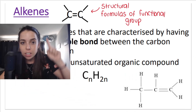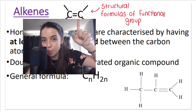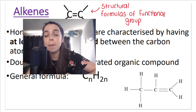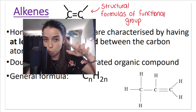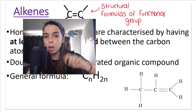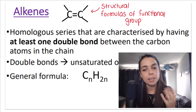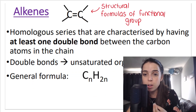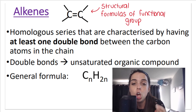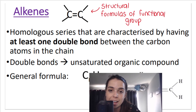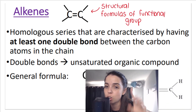When you think alkenes, think double bond. Remember: alkanes have a single bond; alkynes, with a Y, have a triple bond; alkenes have a double bond. Because they contain double bonds or multiple bonds between the carbon atoms in the chain, we refer to them as unsaturated organic compounds.